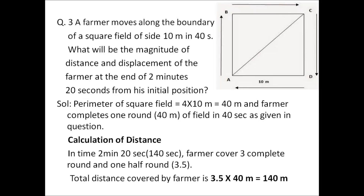So first we will calculate distance. In time 2 minutes 20 seconds — converting to seconds, we have 140 seconds. Since the farmer completes a 40-meter round in 40 seconds, in 140 seconds the farmer can cover three and a half rounds, meaning three complete rounds and one half round. Since distance is the total length covered, we multiply 3.5 × 40 meters = 140 meters total distance.